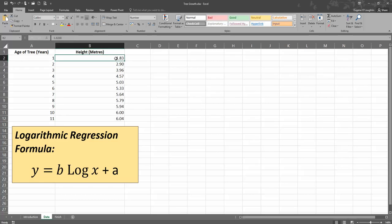For example, 1 year old trees have an average height of 1.83 metres, 2 year old trees have an average height of 2.9 metres, and so on down to 11 year old trees which have an average height of 6.04 metres.